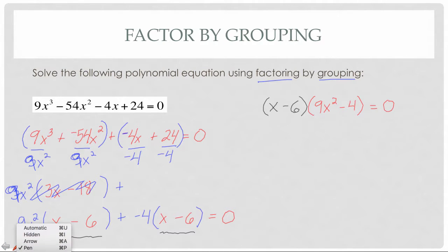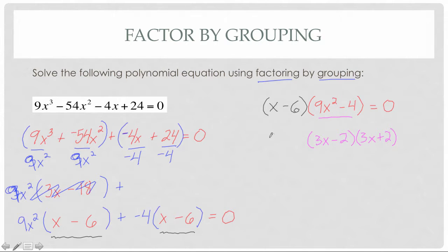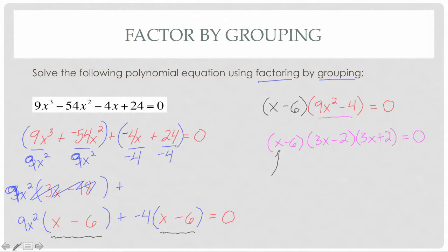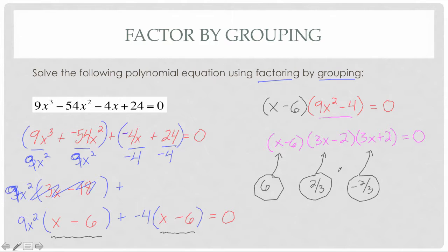Now I notice 9x² − 4 looks familiar — it's a difference of two squares, which we did a few weeks ago. That factors into (3x − 2)(3x + 2). So the fully factored form is (x − 6)(3x − 2)(3x + 2) = 0. The solutions: x = 6 makes the whole thing 0; x = 2/3 gives 3(2/3) − 2 = 0; and x = −2/3. There are three solutions that make the whole thing equal to 0.